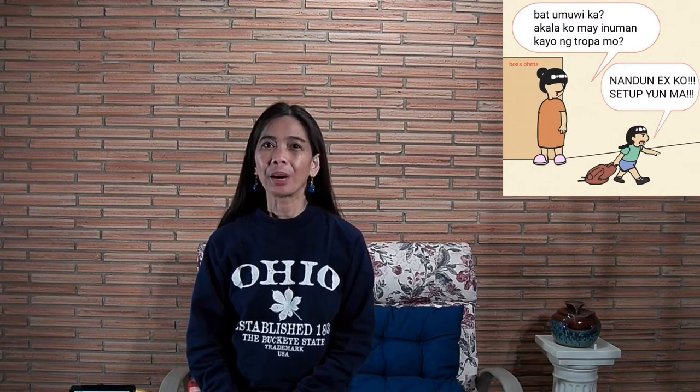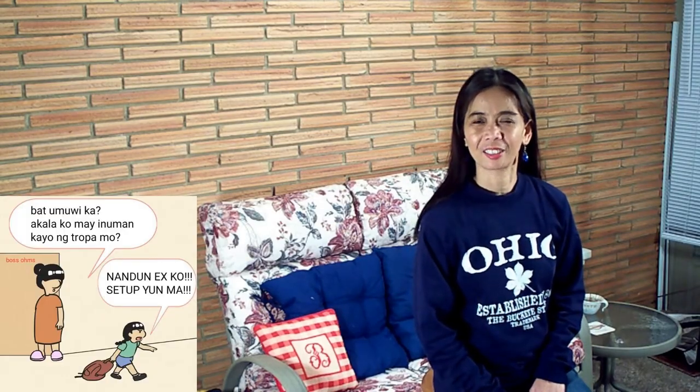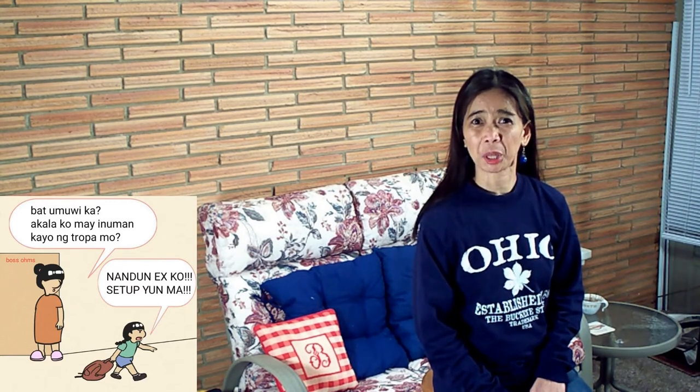Here's exhibit A. Nanay said, 'Did you receive what's due? It's end of the month.' And then Anak said, 'No money — I was told it could happen at the end of the world.' Exhibit B: Nanay said, 'Why are you home so soon? I thought you're partying with friends.' Anak said, 'My ex is there. That is a set up, Ma.' Exhibit C: Anak said, 'Manupo, Nay.' Nanay said, 'God bless you, Anak.' What is manupo?